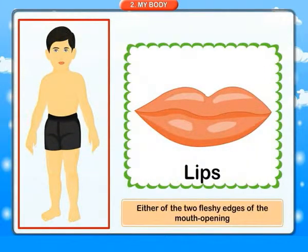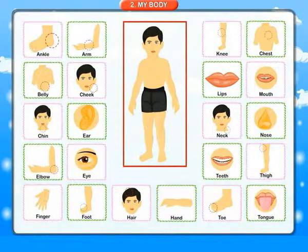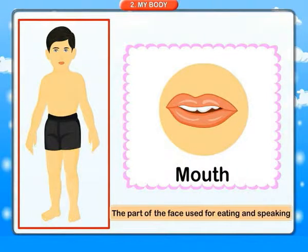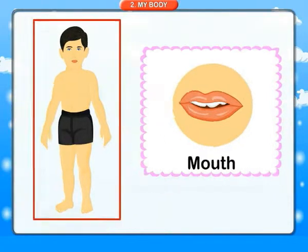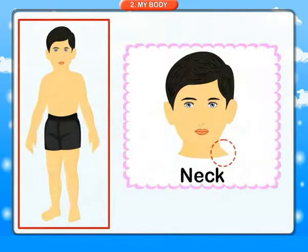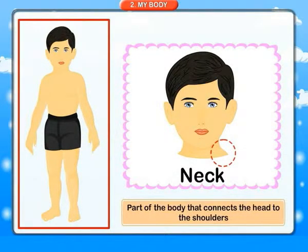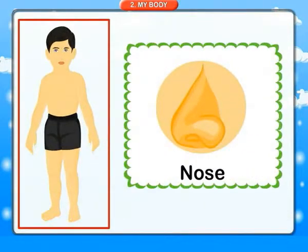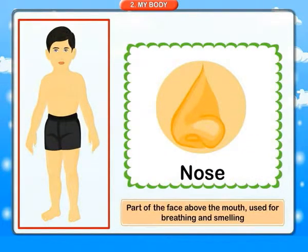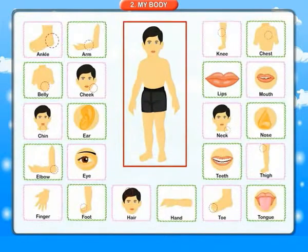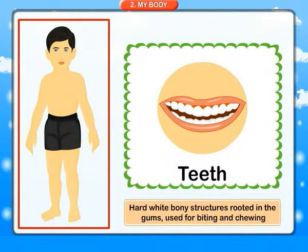Lips: either of the two fleshy edges of the mouth opening. Mouth: the part of the face used for eating and speaking. Neck: part of the body that connects the head to the shoulders. Nose: part of the face above the mouth, used for breathing and smelling. Teeth: hard white bony structures rooted in the gums, used for biting and chewing.